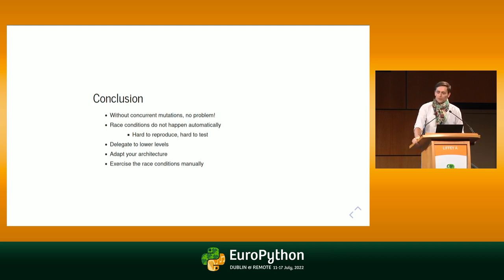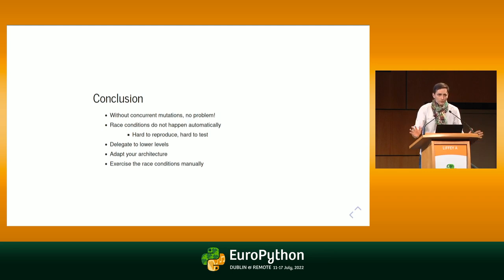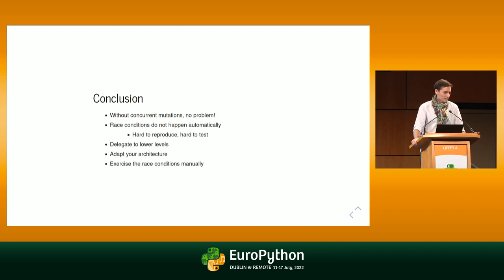As much as you can, delegate to lower levels — let the database handle locks at row or table levels. If that's not enough or you want more performance, double check your architecture. The example here was a bit contrived and we could have come up with an alternative way of modeling things to not have such a high dependency on singular repository access. And when all of this is not enough, just exercise the race conditions yourself. Make sure you can reproduce them, have a failing test, fix it, and keep that test in your test suite. Don't let that be a happenstance or let chance come into play. And that's basically it for my talk. Thank you.